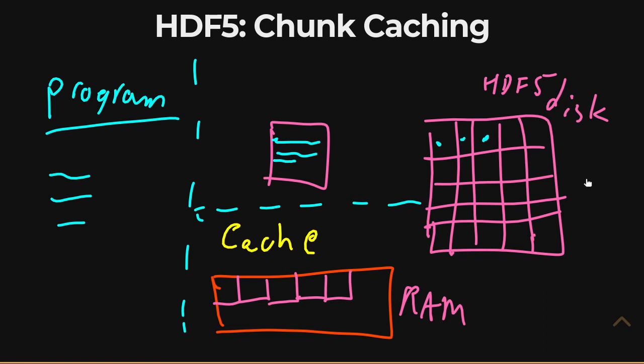So if a particular piece was in the cache, then if the program wants to read the rest of that data, it just reads it from the cache in RAM, and everything is happening super quickly.